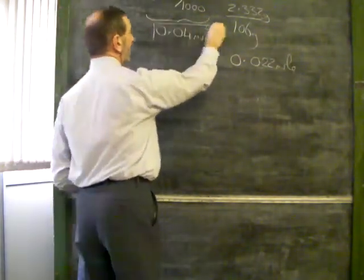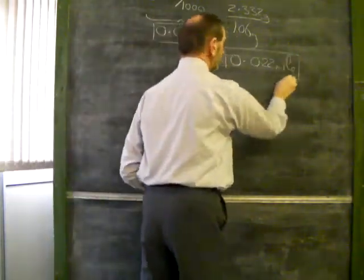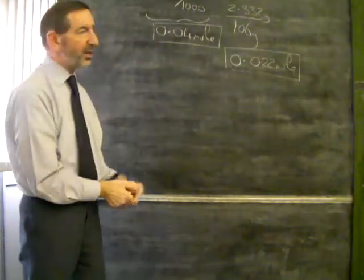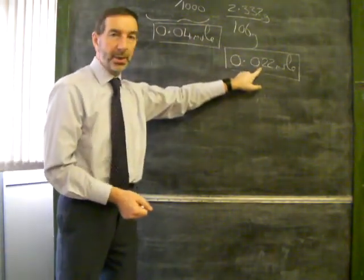So here's how much acid we have, 0.04. Here's how much sodium carbonate we have. It's tempting to say that the acid is in excess, as this number is larger than that. But it may not be that simple.